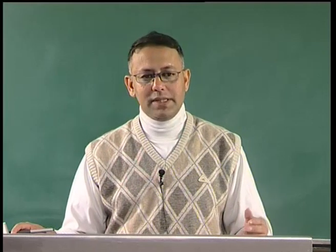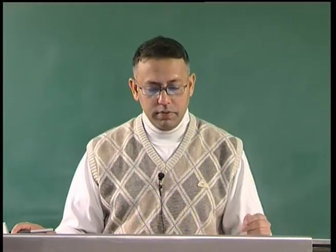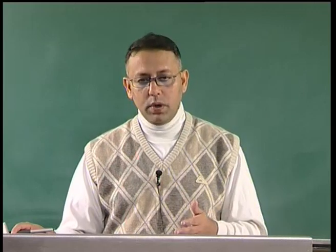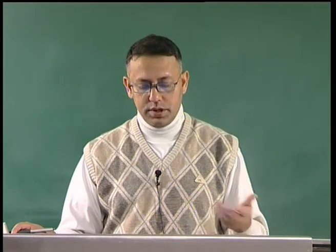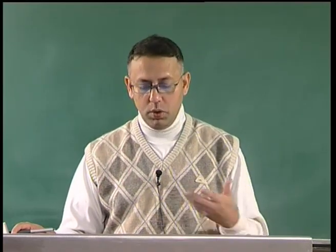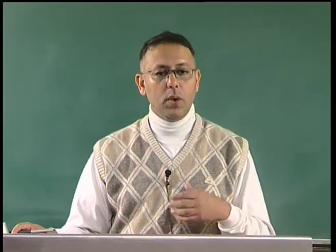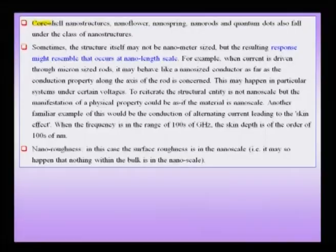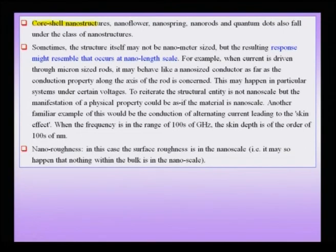The cell wall of an animal cell is made of a protein that has the consistency of oil or thick oil, but at the nano scale this becomes very viscous and performs the role of a cell wall regulating the entire functioning of the cell. There could also be core-shell nano structures, as well as other geometrical entities like nano flowers, nano springs, nano rods, and quantum dots, which are also nano structures.